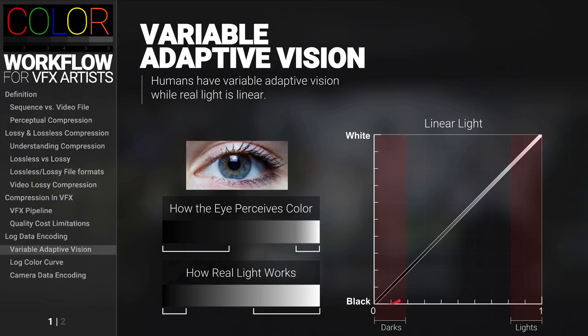And there would be not enough data down at the bottom. So to compensate for the lack of information in the darks, your image capture would have to be huge. And ultimately, shooting in linear would be a waste of space.